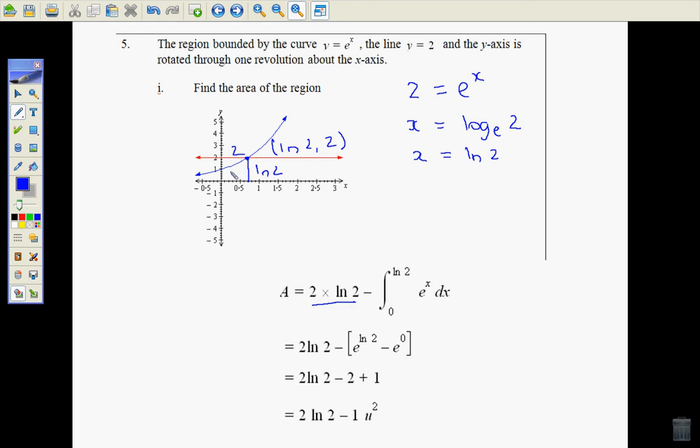And what I'm going to do is take away the area under the curve here and that will leave me the remainder which would just be this area in this part here. So if I integrate e to the x between 0 and natural log of 2, that should give me the area under the curve which I can subtract.